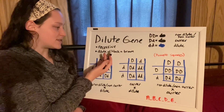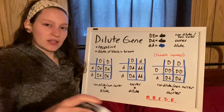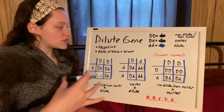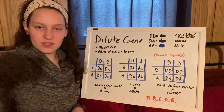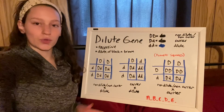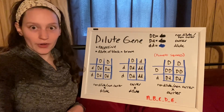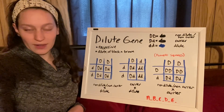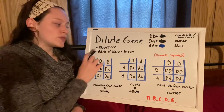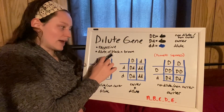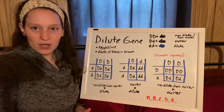Blue or lilac are the two main versions of dilute, and you can see them in various varieties like blue otter, lilac otter, broken blue, broken lilac, and all of that. Blue is the dilute of black, and lilac is the dilute of brown or chocolate.